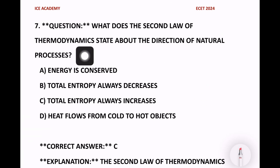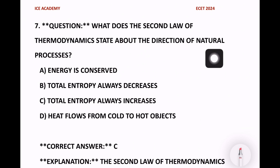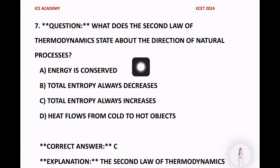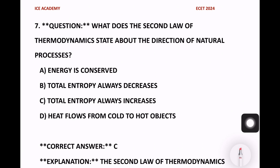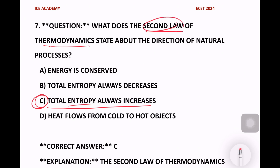What does the second law of thermodynamics state about the direction of natural processes? Options are: energy is conserved, total entropy always decreases, total entropy always increases, heat flows from cold to hot. The second law of thermodynamics states that total entropy always increases. So option C is the right answer.